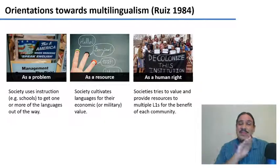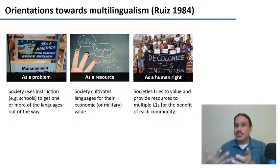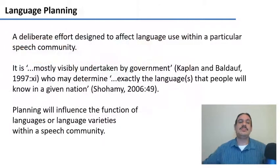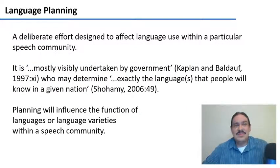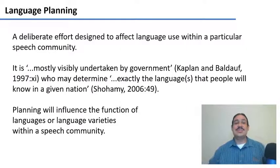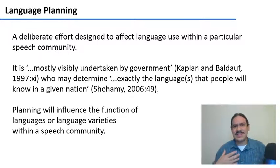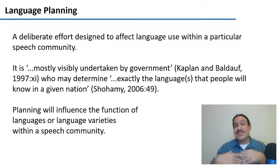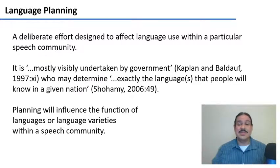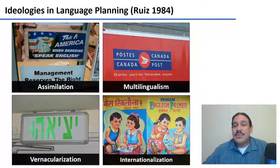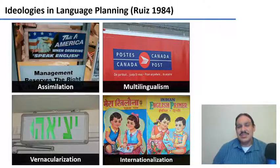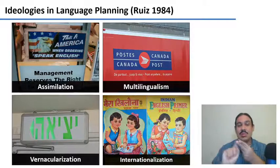Whichever of these three approaches you choose, you then have to decide what you're going to do about multilingualism. This is where language planning comes in. Language planning is a deliberate effort to steer the use of language in one direction or another. It is mostly done by governments, but also by individuals. Whoever makes these decisions is trying to decide which languages are going to be used in a nation or society, and which functions are going to be assigned to each language. There are basically four ways to plan these functions: assimilation, multilingualism, vernacularization, and internationalization.